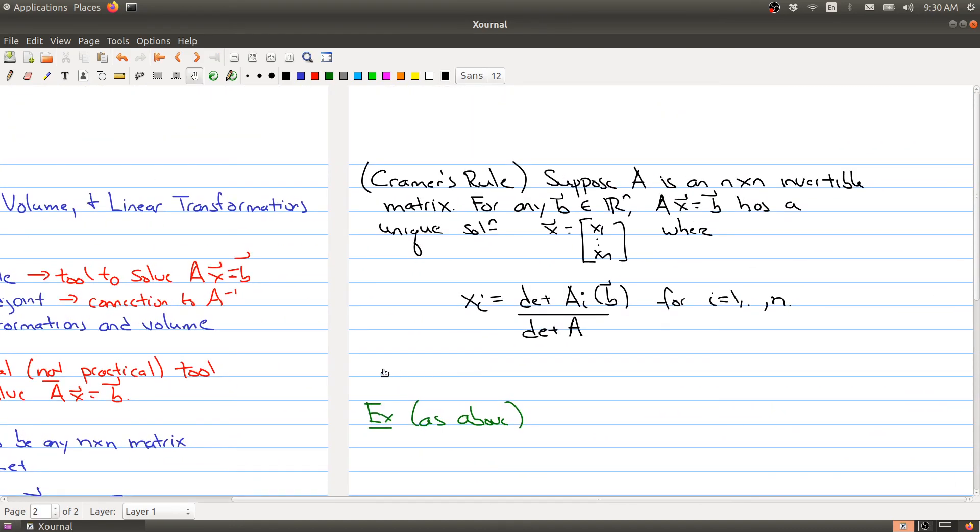And Cramer's rule gives you a new way to solve a system of equations. But there's an extra hypothesis: suppose that you start with an invertible matrix. Now for any B in R^n, this system has a unique solution. What's new coming from Cramer's rule is that if you look at this vector, it's an n-tuple with n entries. We can figure out what each of these values are using the determinant. In particular, the i-th entry is given by taking the determinant of this matrix that we get by replacing the i-th column of A with B and dividing it by the determinant of A.